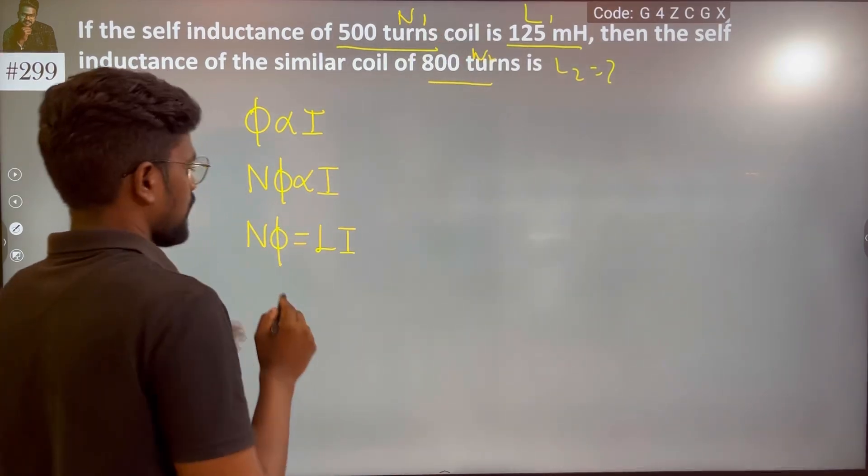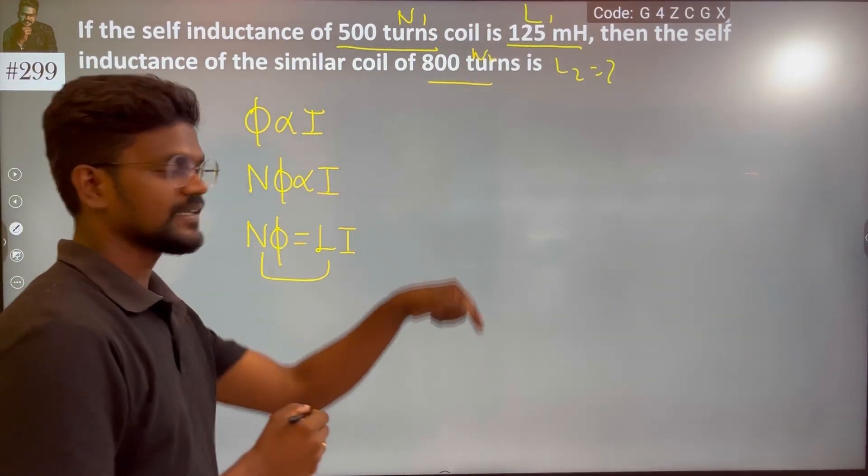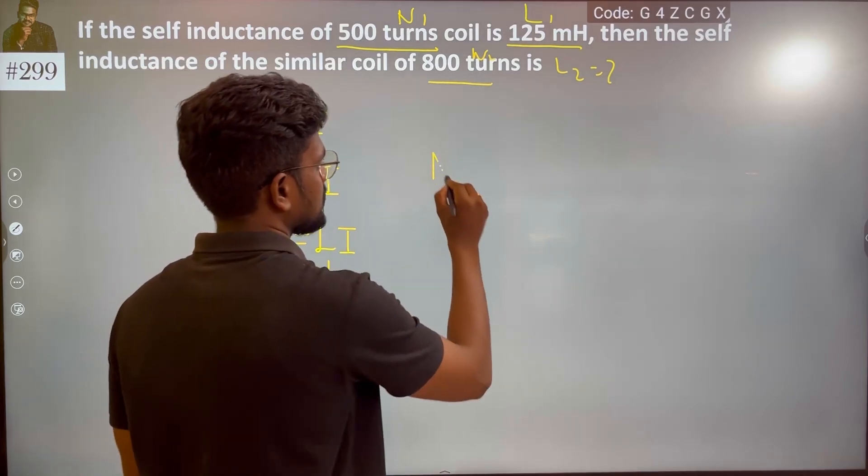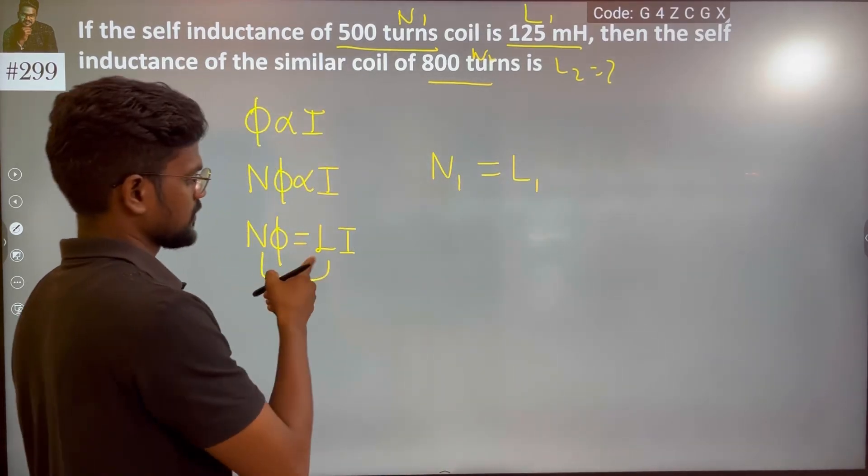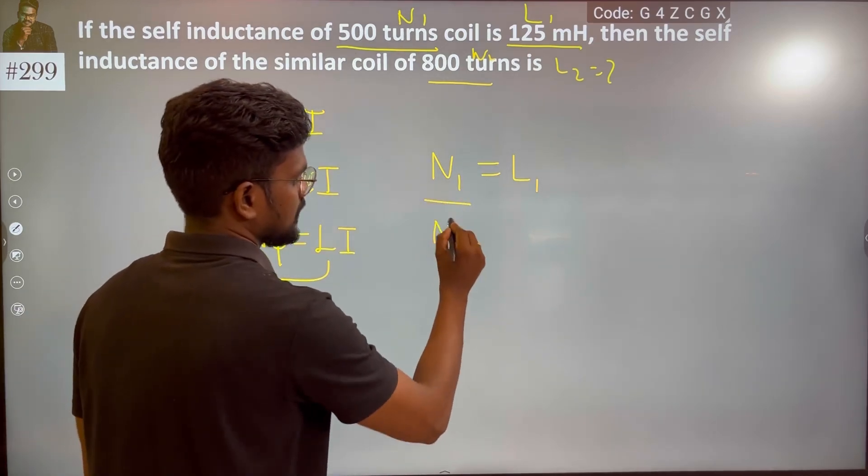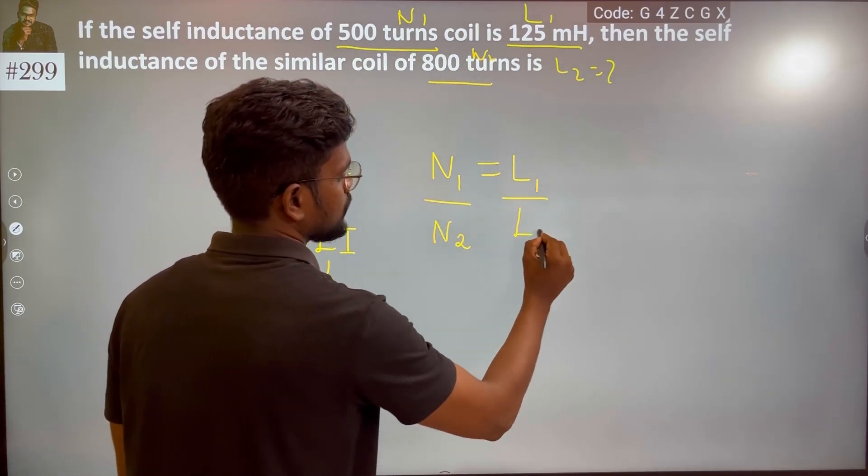If it is directly proportional, n and L are directly proportional. So n1 equals L1 and then n2 equals L2.